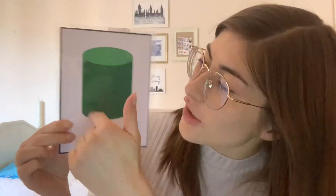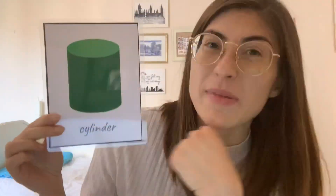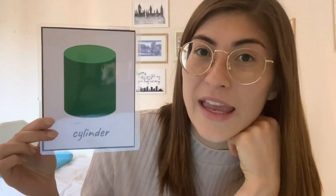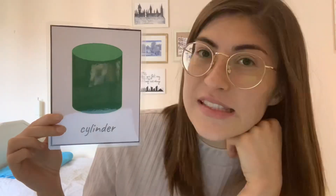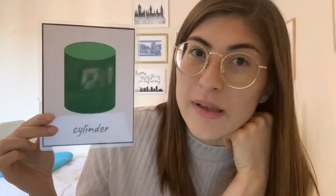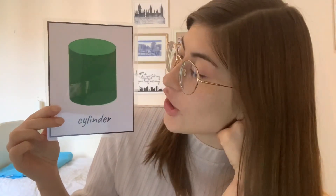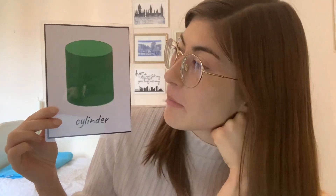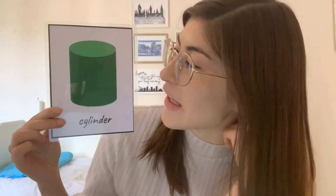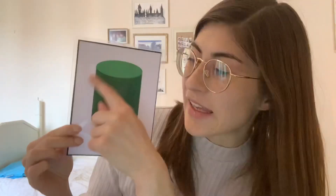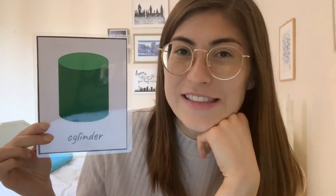Some things that are the shape of a cylinder might be a can of food or a can that has a drink inside. It could be a box or a container, or even a game — you could have a game inside a container like this.